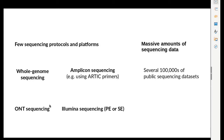In terms of sequencing platforms, there are really just two worth mentioning: Illumina sequencing on one hand, and Oxford Nanopore Technology (ONT) sequencing on the other. Illumina sequencing comes in two flavors — single-end (SE) and paired-end sequencing. The second characteristic of SARS-CoV-2 data is kind of the opposite of this small number of protocols and platforms.